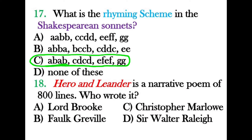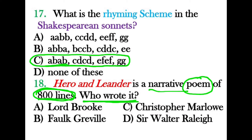Hero and Leander is a narrative poem of 800 lines. Its theme was derived from Greek mythology, in which Hero was a female and Leander was a man — a love story. The writer was Christopher Marlowe. This question was included to prepare for the next lecture on English drama, as Christopher Marlowe was a great figure in English drama.